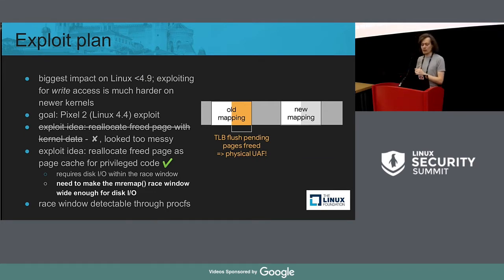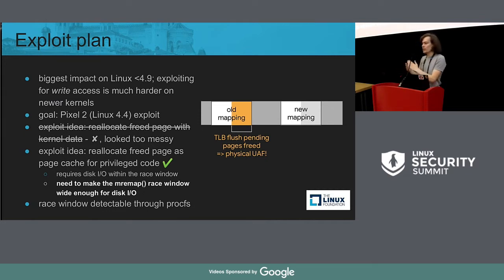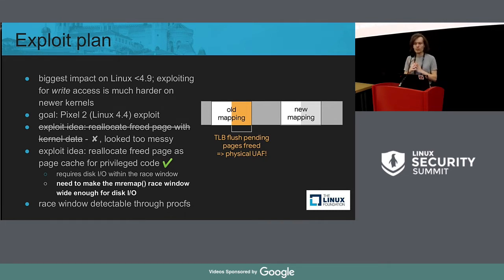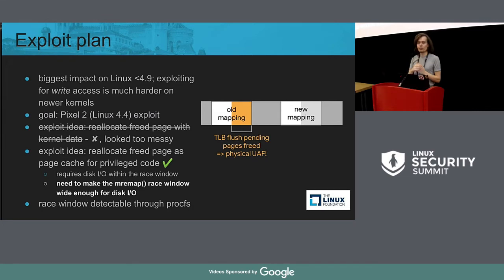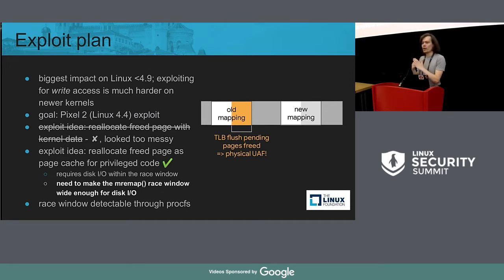Instead I decided to reallocate the page as a page belonging to user space — specifically as a page cache page for a file. So you trigger the bug to get the page freed, then trigger a read on a specific page in a shared library used by a privileged process. This read allocates the freed page into the page cache for that file, reads data from disk into it, and then hopefully you can modify this page of code before some privileged process uses it — escalating privileges into the context of that process.